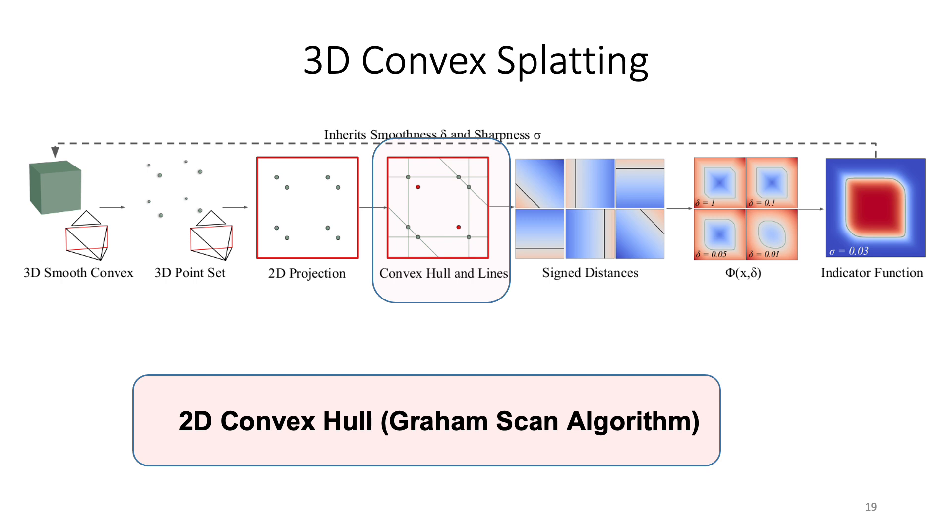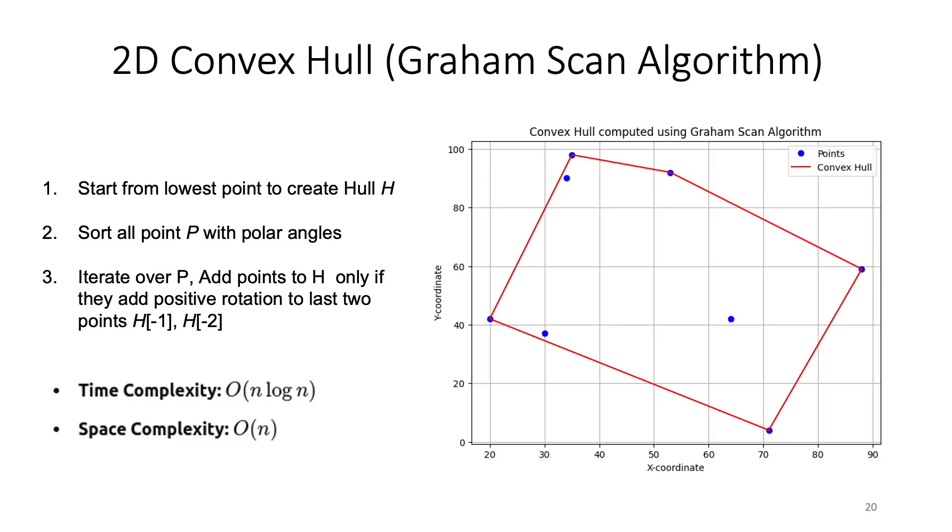We take the 2D convex hull of these points using the Graham scan algorithm. So this algorithm is a very efficient algorithm to take the 2D convex hull of 2D points basically by sorting them according to a polar angle and then only accepting points that keep the positive counterclockwise orientation of the last two points. It's very efficient. It works in the linear log scale of the number of points per convex, which is usually small.